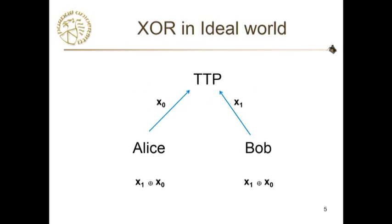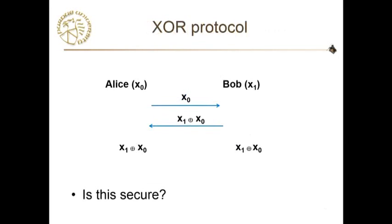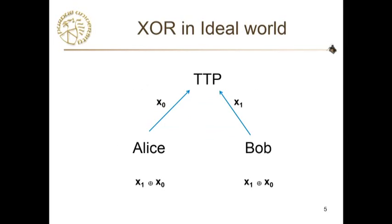Let's see why this is a secure protocol. We compare it with the ideal world, in which we have a trusted third party — an incorruptible third party. Alice and Bob have secure channels to it. Alice sends her bit, Bob sends his bit, the trusted third party computes the XOR and sends it back. It is possible for Alice and Bob, given the output, to compute the other party's input. That's the whole idea. Even in an ideal world, it is possible for the other party to compute it. That is why the previous protocol was secure. Given the XOR of two bits and my own input, I can compute the other party's input as well.